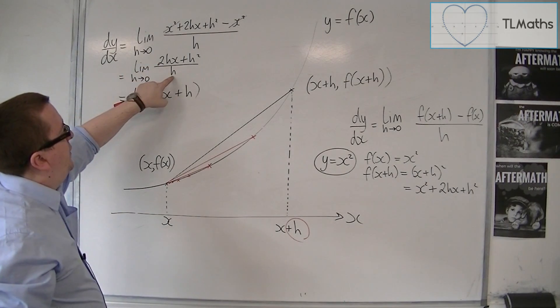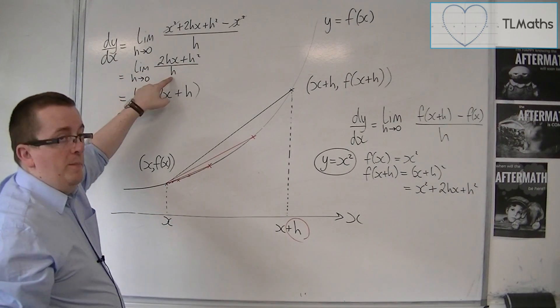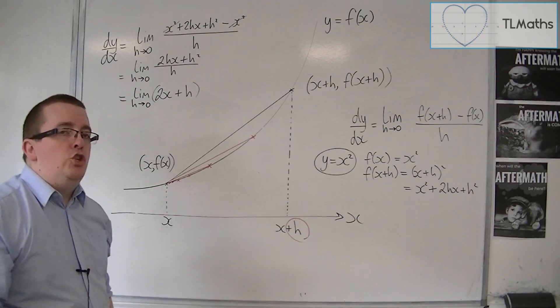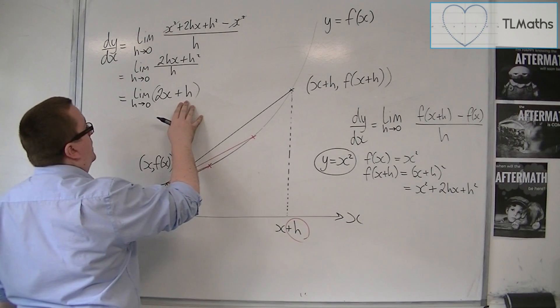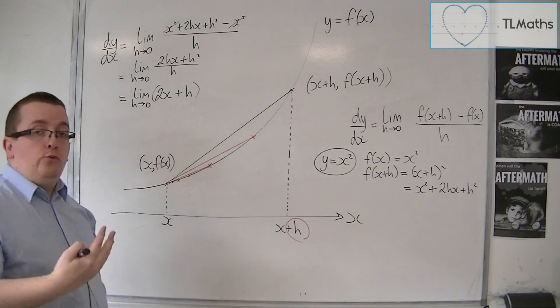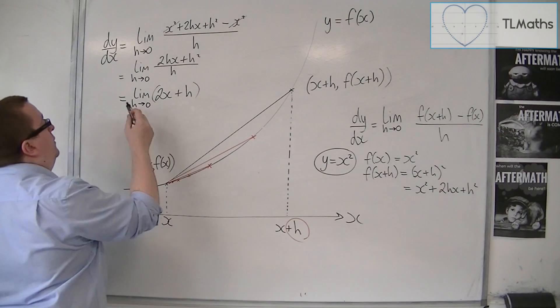Because I've got 2hx divided by h and h squared divided by h, which leaves me this. And so, as h gets closer and closer and closer to 0, 2x plus h will get closer and closer and closer and closer to just 2x.